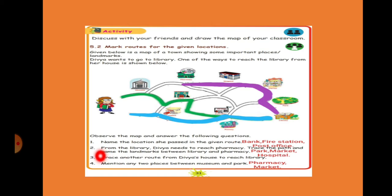Now the second question. From the library Divya needs to reach pharmacy. Trace the path and name the landmarks between library and pharmacy. From here to pharmacy she has to go. That is why she is going like this. Now trace the path and see what is there in between. Park is there, market is there, and hospital is there in between library and pharmacy.